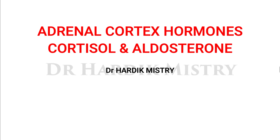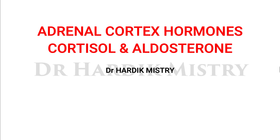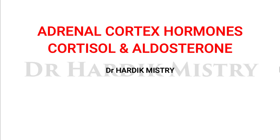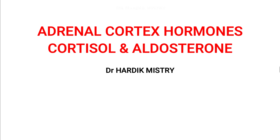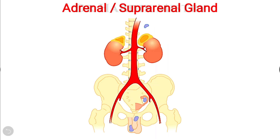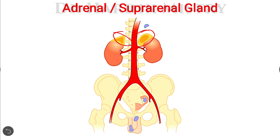In this video we are going through the hormones of the adrenal cortex. The adrenal glands, also known as suprarenal glands, are located on the superior pole of the kidney.